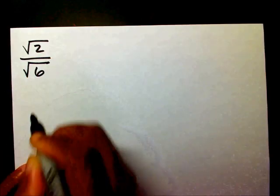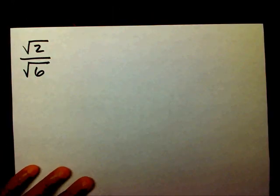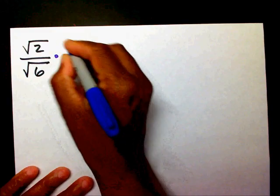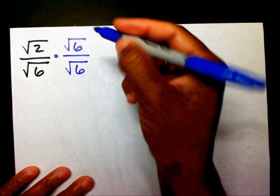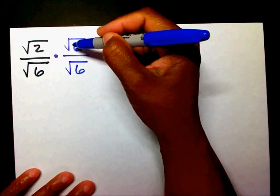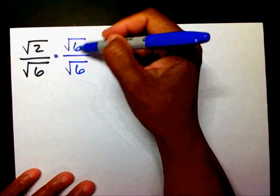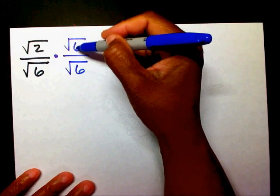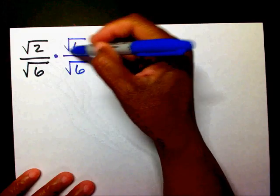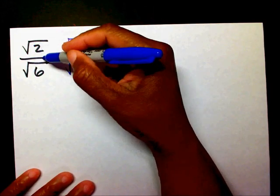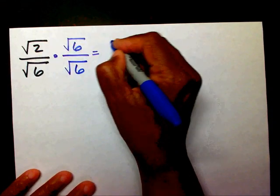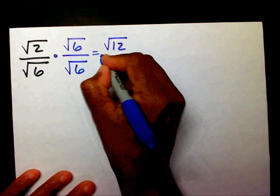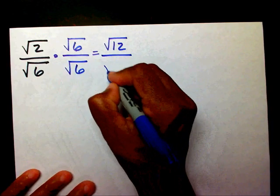Let's do another one. I have radical 2 divided by radical 6. Again, I'm going to rationalize my denominator. I'm going to multiply the numerator and the denominator by radical 6. By multiplying by radical 6 over radical 6, this equals 1 — any number over itself gives you 1 — so we're just multiplying by 1. I'm going to multiply 2 times 6, which is radical 12, over radical 6 times radical 6, which is radical 36.